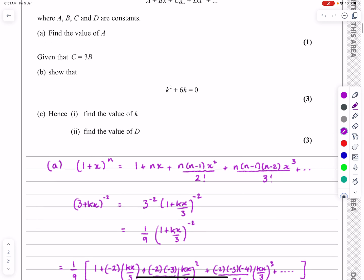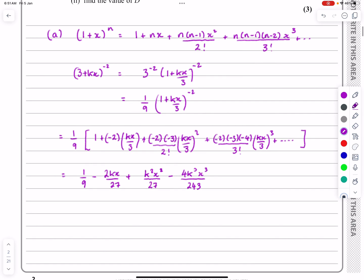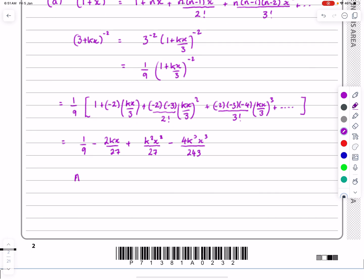Part A says find the value of A. So here A is just equal to a ninth. So that's that first bit.